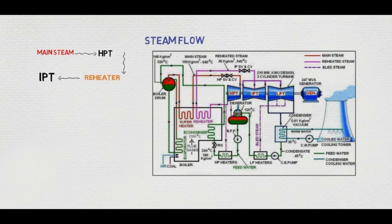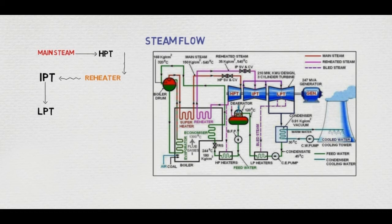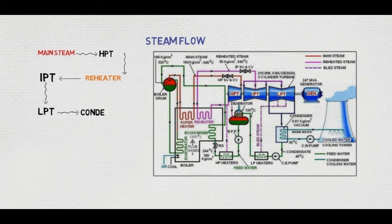From the IPT, the rest of the steam passes through the LPT — the low pressure turbine, which is the last stage of the turbine. From the LPT, the steam is condensed in the condenser through cold water tubes which come from the cooling tower.